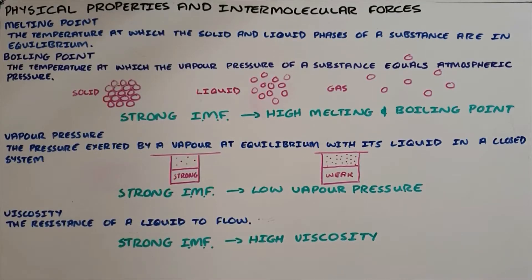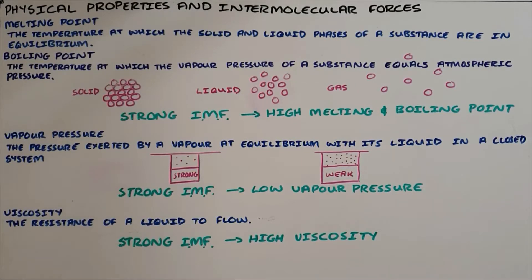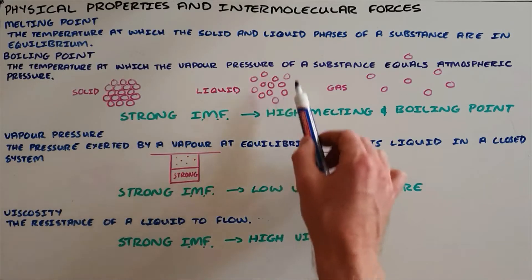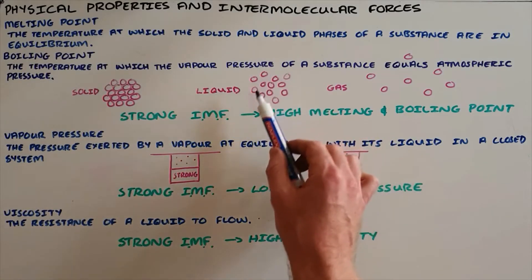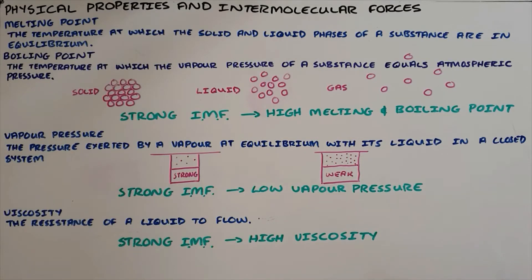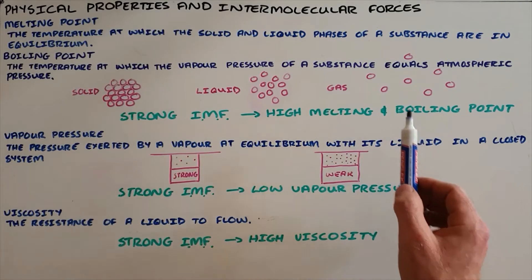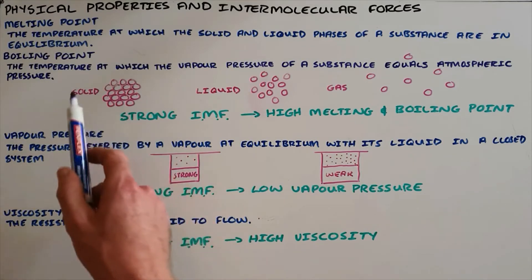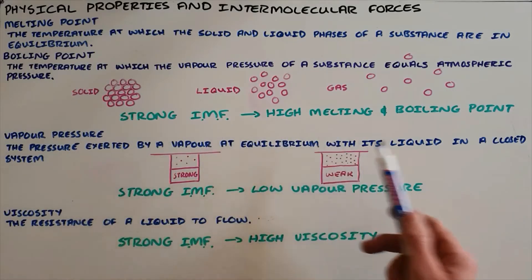Physical properties are properties that can be measured, and there are largely four physical properties that we deal with. The first two are melting point, which is the temperature at which the solid and liquid phases of a substance are in equilibrium, and boiling point, which is the temperature at which the vapor pressure of a substance equals the atmospheric pressure. In a solid, particles are densely packed and fairly neatly arranged; in a liquid, they are still fairly densely packed but randomly arranged; and in a gas, particles have large distances between them with no arrangement. To convert from solid to liquid or liquid to gas, it is necessary to break the intermolecular forces between molecules. Substances with stronger intermolecular forces will have higher melting and boiling points.